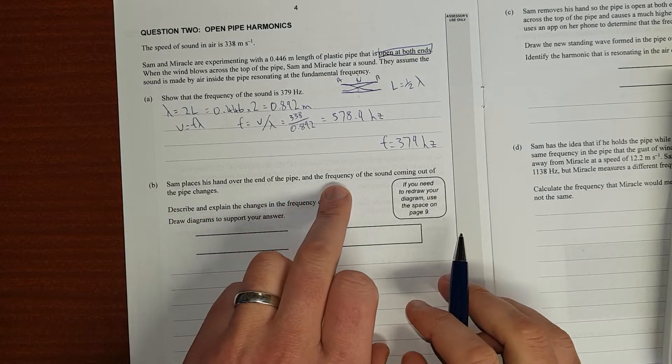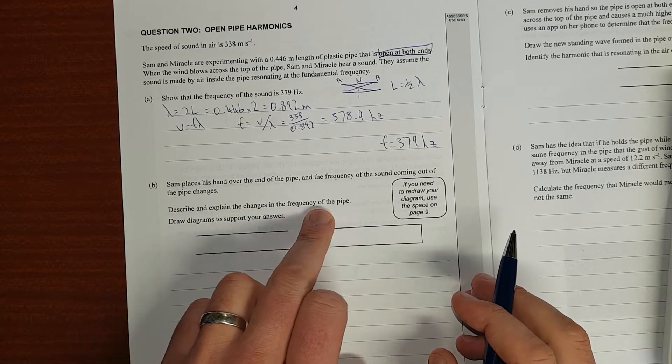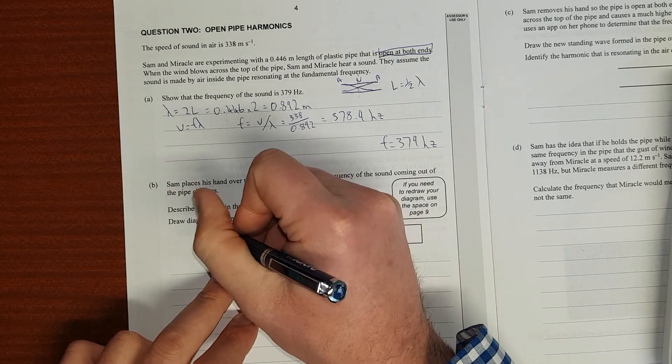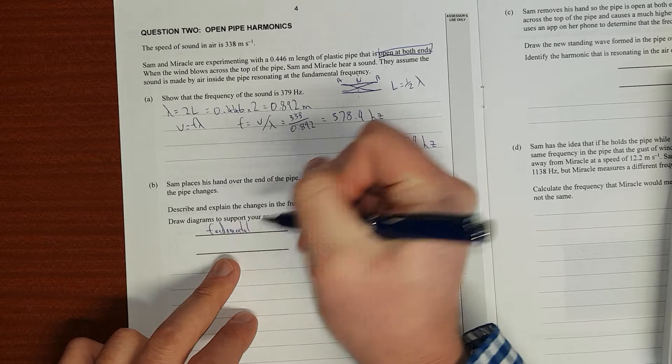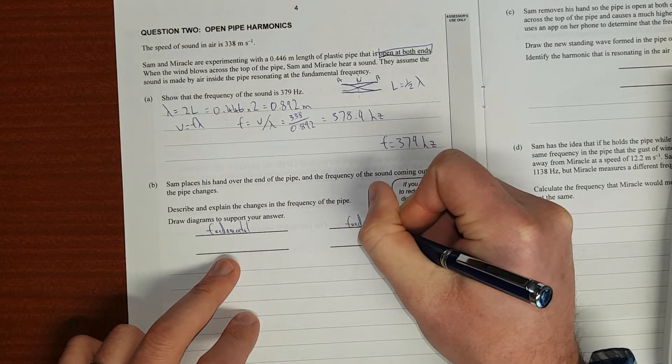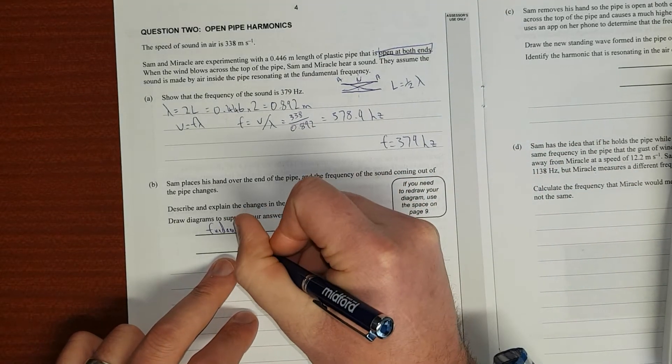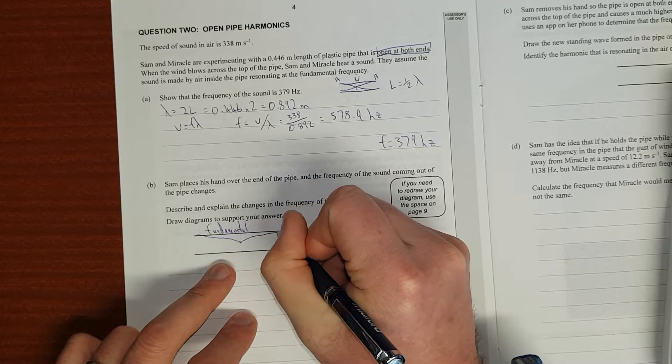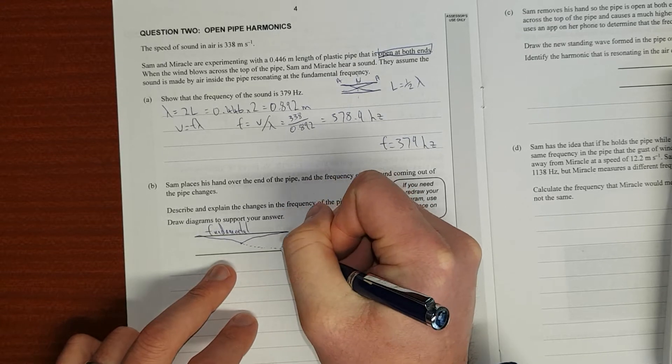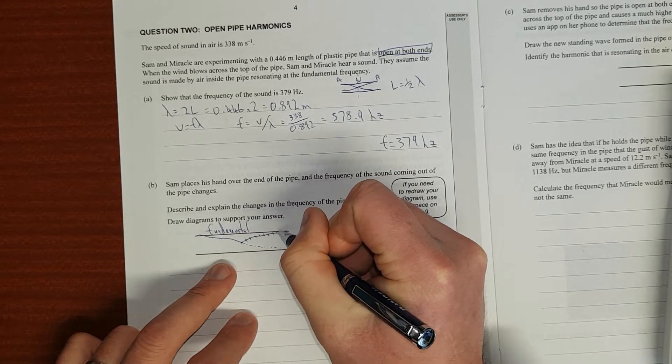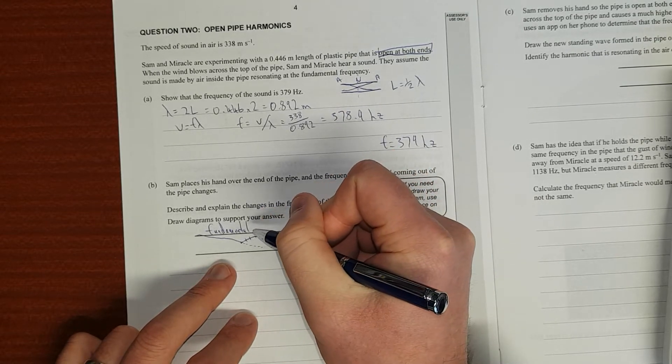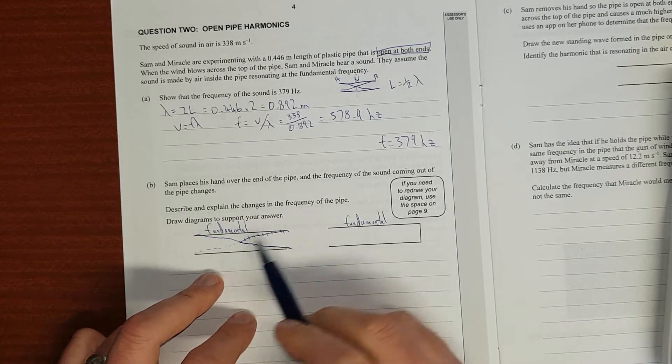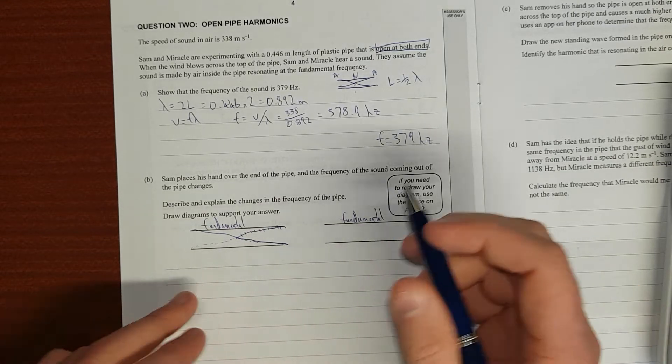Sam places a hand over the end of the pipe and the frequency of sound coming out of the pipe changes. Describe and explain any changes in the frequency of the pipe. Use diagrams to support your answer. So we'll do the fundamental for both. We'll be comparing apples with apples. We have a node in the center, just like I've drawn up there. Go out to the top, there's our first anti-node. And then we'll draw a dotted line to there.